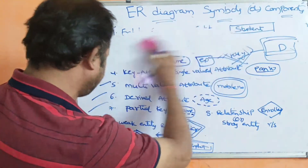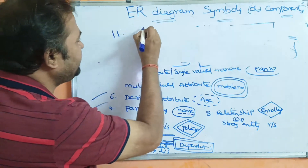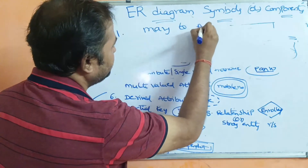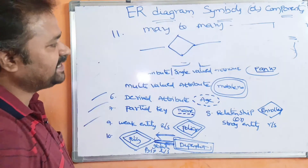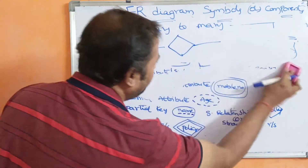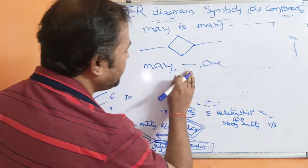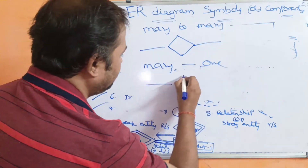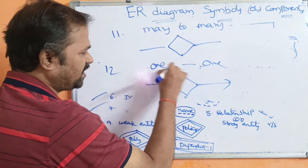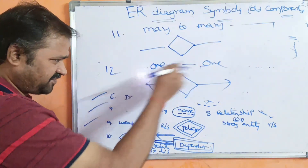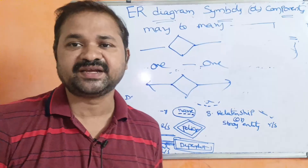We have several cardinality relationships: many-to-many, many-to-one, and one-to-one. In a many-to-many relationship, we don't use any arrows on either the left or right side. In a many-to-one relationship, the arrow points toward the 'one' side. In a one-to-one relationship, arrows are used on both the left side and the right side. These are the various symbols or components used in the ER diagram.